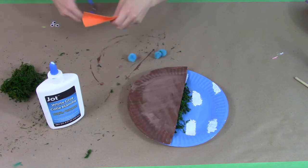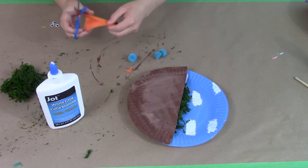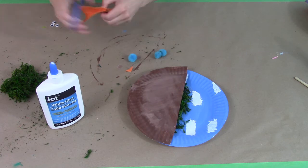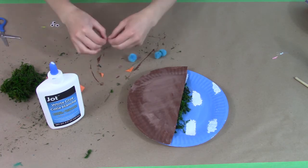Then we're going to make the bird's beaks. So grabbing your orange felt you're just going to cut out three small triangles. The size doesn't really matter just make sure that they fit with the pom-pom size.